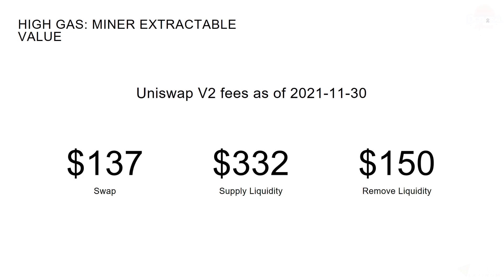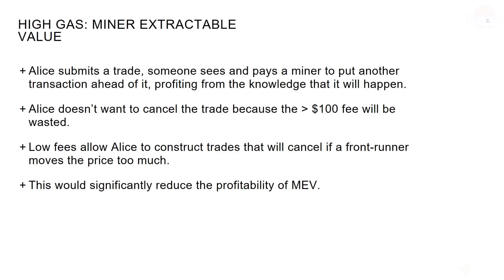Secondly, miner extractable value. These are the current Uniswap V2 fees as of yesterday: $332 to supply liquidity and $137 to swap. If Alice submits a trade, someone can see that trade and pay a miner to put another transaction in and profit from it. That's what we call miner extractable value or MEV. Alice doesn't want to cancel the trade because it's so expensive. Low fees allow Alice to cancel those trades or construct trades that will cancel automatically if a front-runner moves the price, and this dramatically reduces the profitability of MEV.